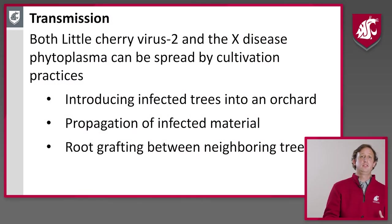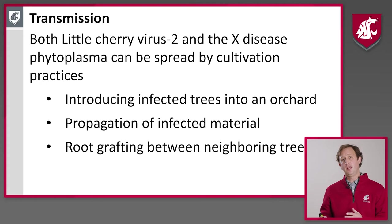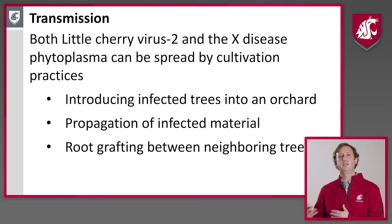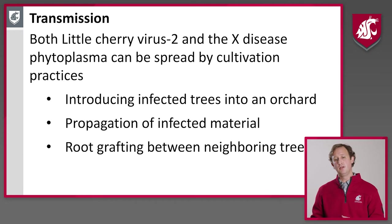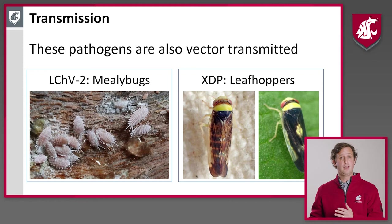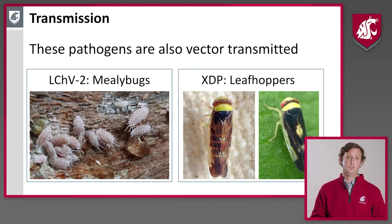Little cherry virus 2 and X disease phytoplasma can both be spread by a number of propagation or cultivation practices. You can bring infected trees into the orchard, propagate infected material, or have root grafting between neighboring trees. The other way is vectoring by leafhoppers for X disease phytoplasma, or by mealybugs for little cherry virus 2.